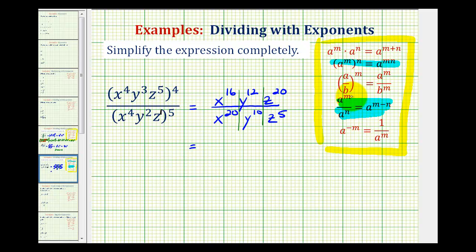We'll have the exponent of the numerator minus the exponent of the denominator. So we'll have x to the power of sixteen minus twenty, that's negative four, y to the power of twelve minus ten, that's two, and z to the power of twenty minus five, that's fifteen.